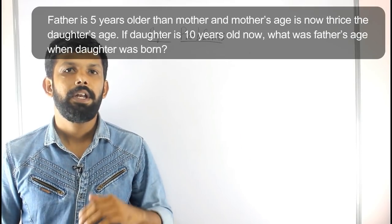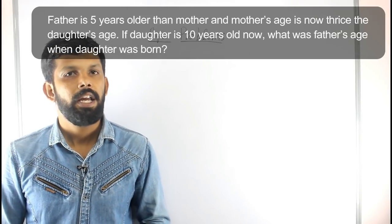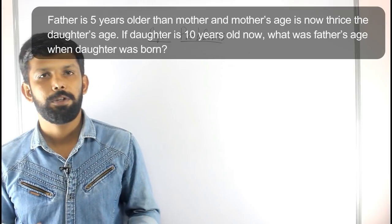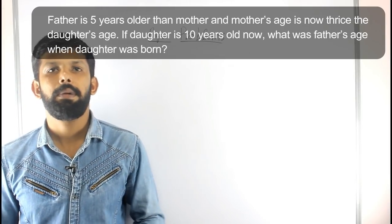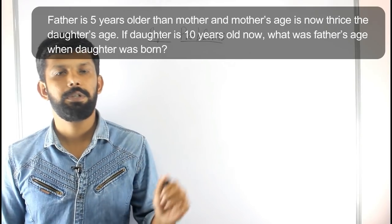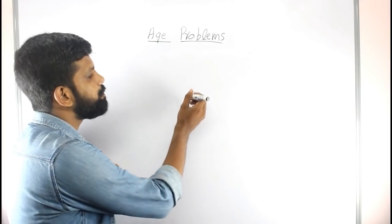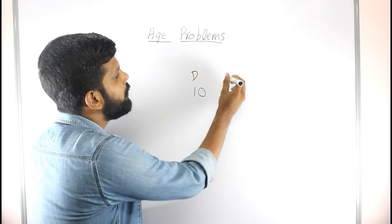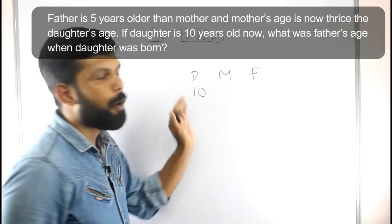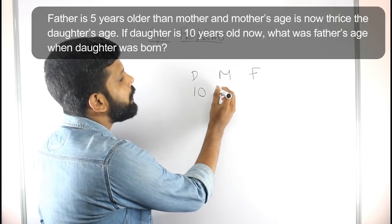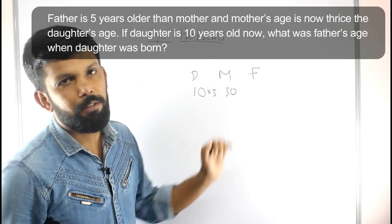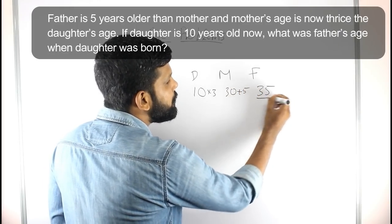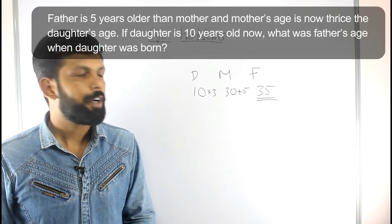Since the daughter is 10 years old, mother's age is 3 times that, which is 30. Father is 5 years older than mother, so father's age is 30 plus 5, which is 35.